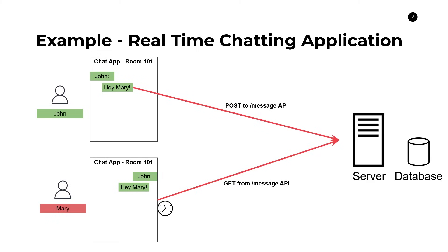There is a slight improvement on this model called long polling. Instead of Mary's application calling repeatedly on a consistent timer, the initial call will still be made, but the server will hold on to the request and won't respond right away. It'll delay responding and internally check against the database for when new messages are received. When a new message is received, it'll finally respond back to Mary's application and display that information. Subsequently, Mary's application will make another call and continuously repeat this process, with the request staying open until the server gets new content. This is slightly better than short polling, but a little more difficult to implement and requires some work on the backend.